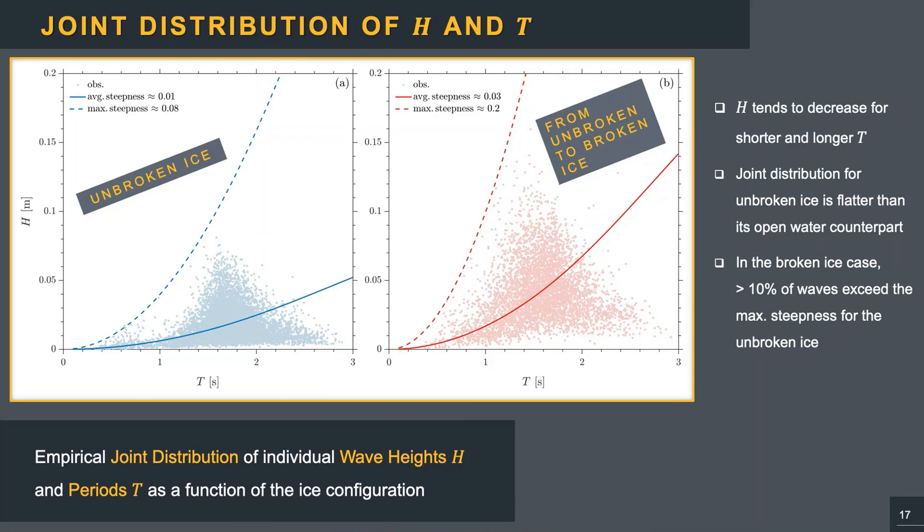This figure shows the joint distribution of individual wave heights and related periods, recorded at a location where the ice remained compact and where the ice transitioned to broken. The blue and red lines represent the average and maximum steepness for each data center. For unbroken ice, the data are distributed along an average steepness of 0.01, that is half of the characteristic steepness of the mildest incident wave field tested, meaning that the joint distribution is flatter than its open water counterpart. Therefore, the wave-induced load on the ice cover is too weak to cause the breakup. In contrast, when the ice transitions to broken, the shape of the distribution is more similar to the joint distribution in open water. More than 10% of waves exceed the maximum steepness for unbroken ice, confirming a significant load on the ice cover.